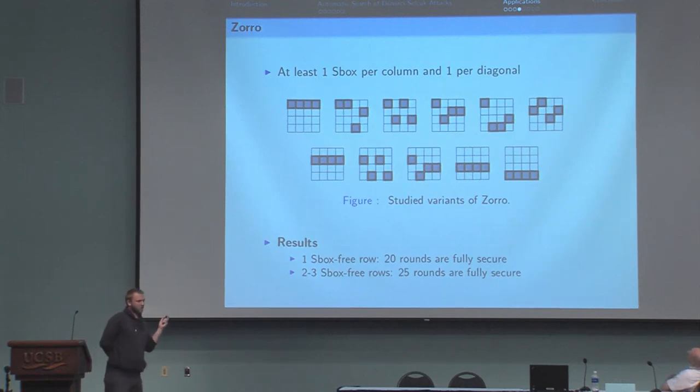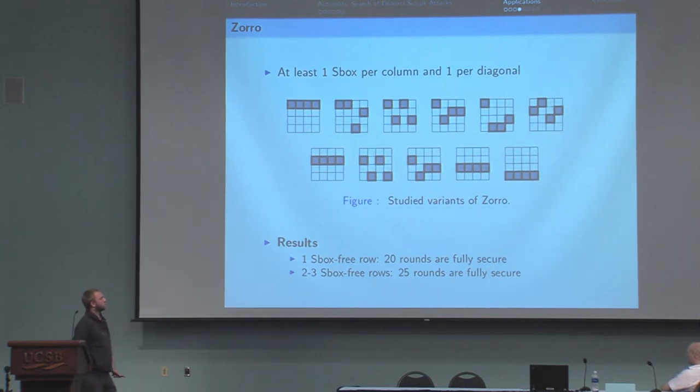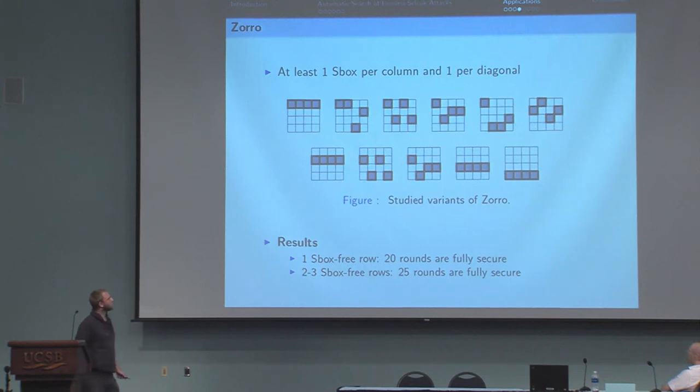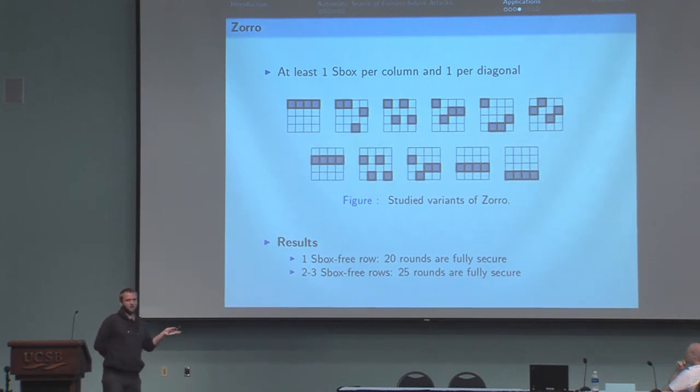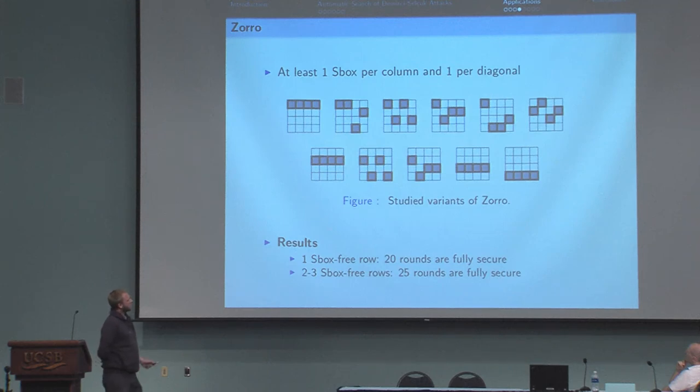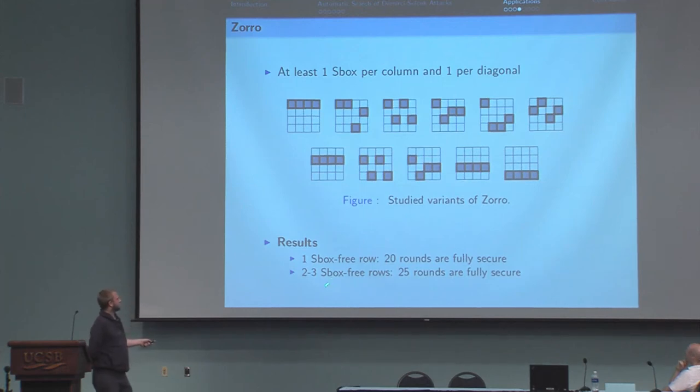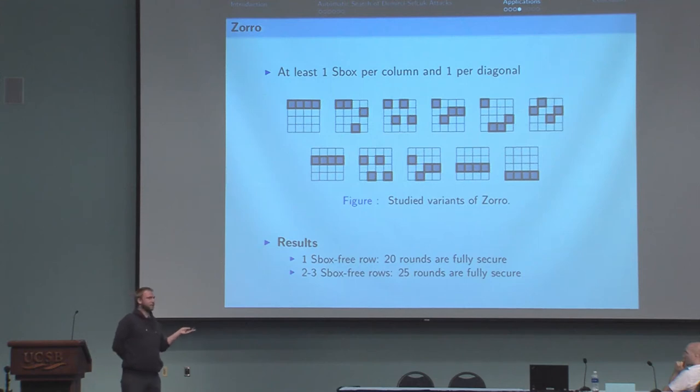As a result, we found that the resistance to Demirci-Selçuk attacks only depends on the number of S-box-free rows. If there is only one S-box-free row, then 20 rounds are required to be fully secure against such attacks, while if there are two or three S-box-free rows, then 25 rounds are required to be fully secure. Zorro is here, so there are three S-box-free rows.